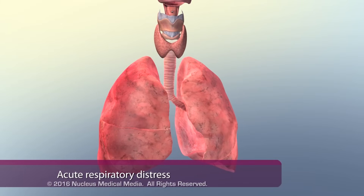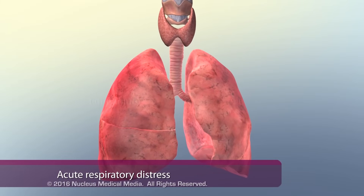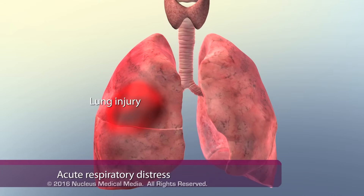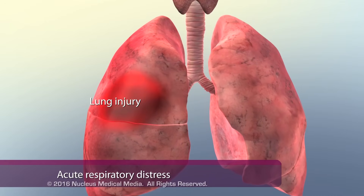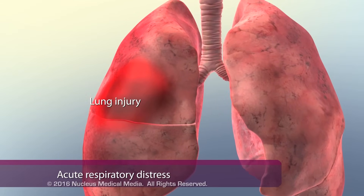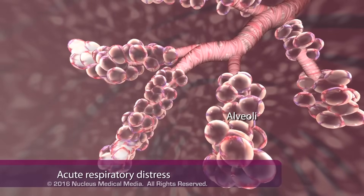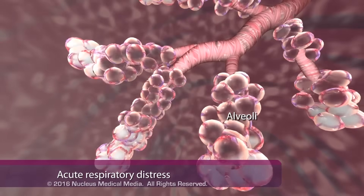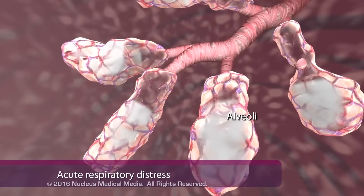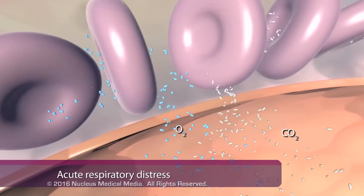In contrast, acute respiratory distress syndrome involves injury to one or both lungs, caused by factors such as trauma or blood infection called sepsis. Inflammation leads to alveolar fluid accumulation and alveolar collapse, reducing the surface area available for gas exchange.